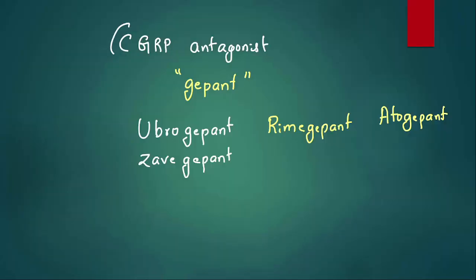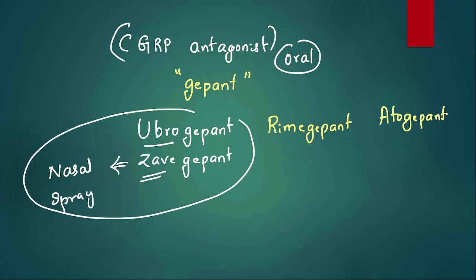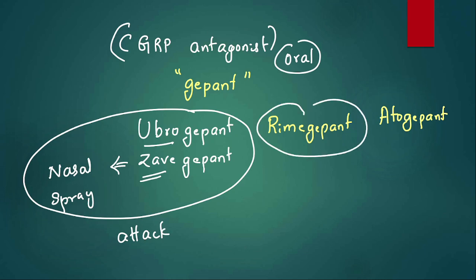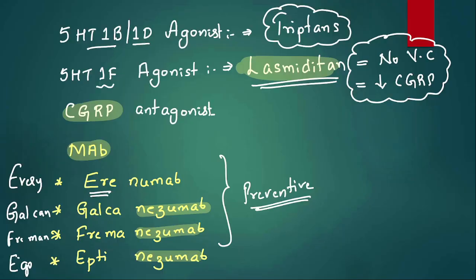There are also oral CGRP antagonists called gepants. Ubrogepant, zavegepant — remember zavegepant is given as a nasal spray, so it works quickly. These gepants are for acute attack of migraine. Rimegepant is for both attack and prophylaxis. Atogepant is only for prophylaxis. The monoclonal antibodies (MABs) are for preventive treatment only and are not given orally.